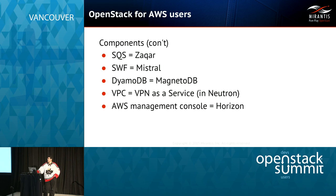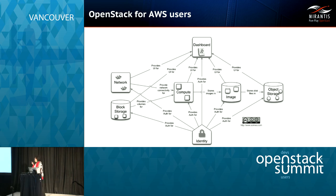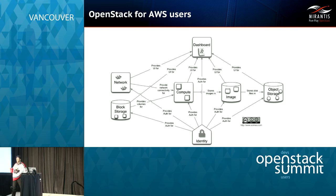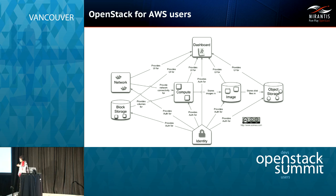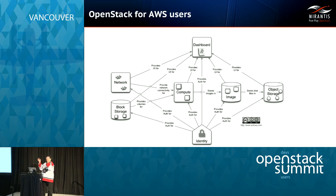For AWS users, here's a simple look at how a lot of this works together. You've got the dashboard that provides management for all of the other layers, and everything hooks into the identity service at the bottom. That's a very brief overview of OpenStack for AWS users.